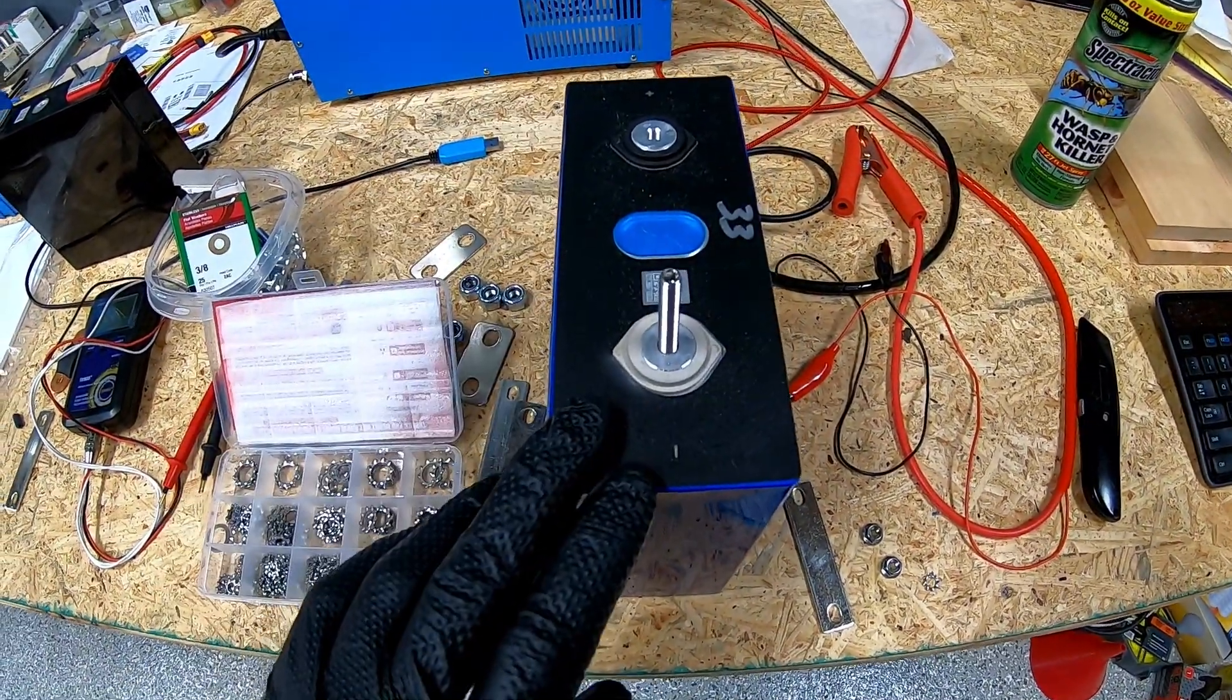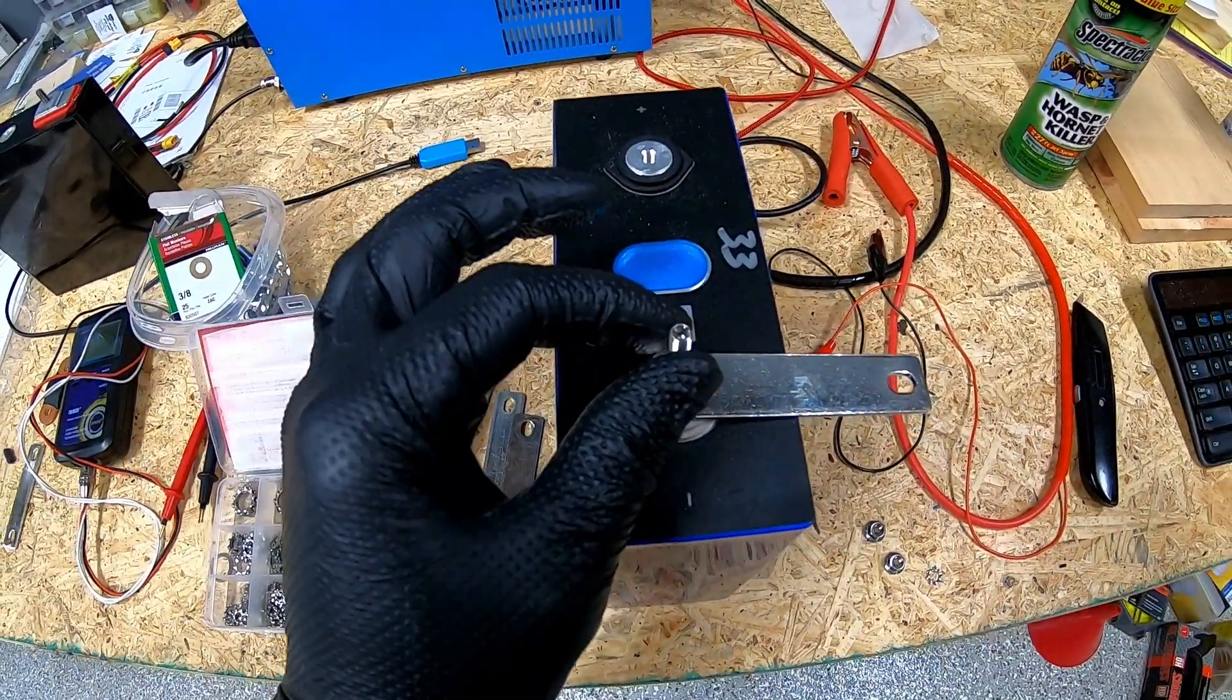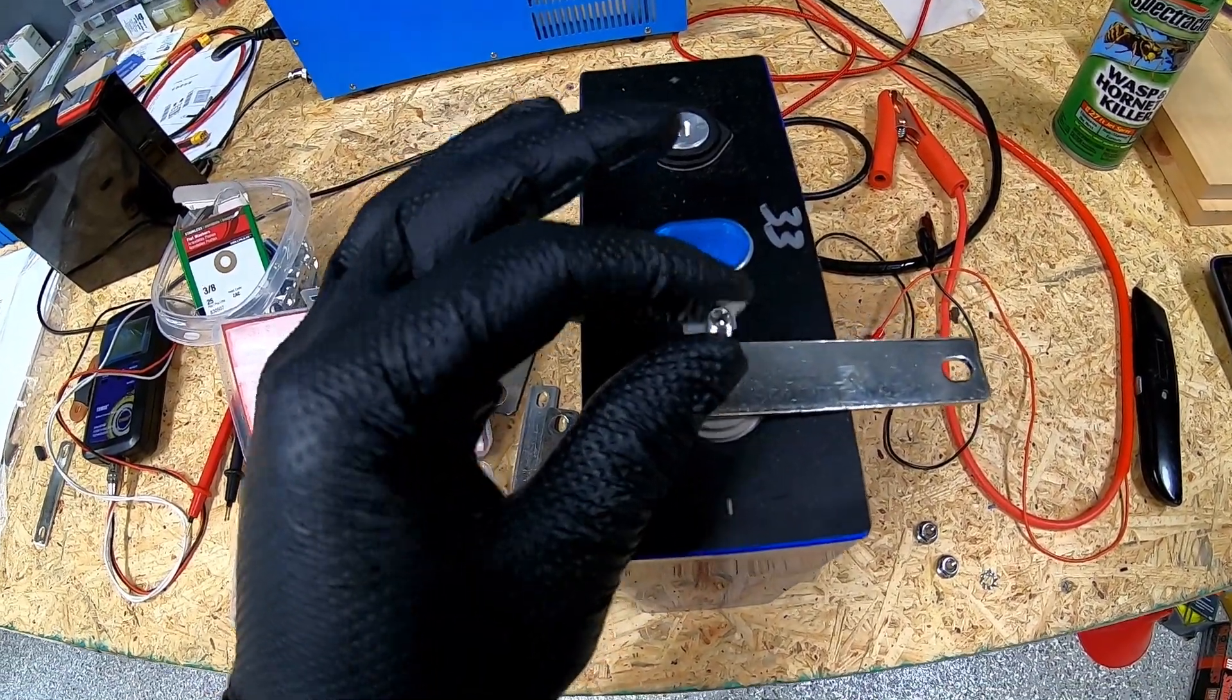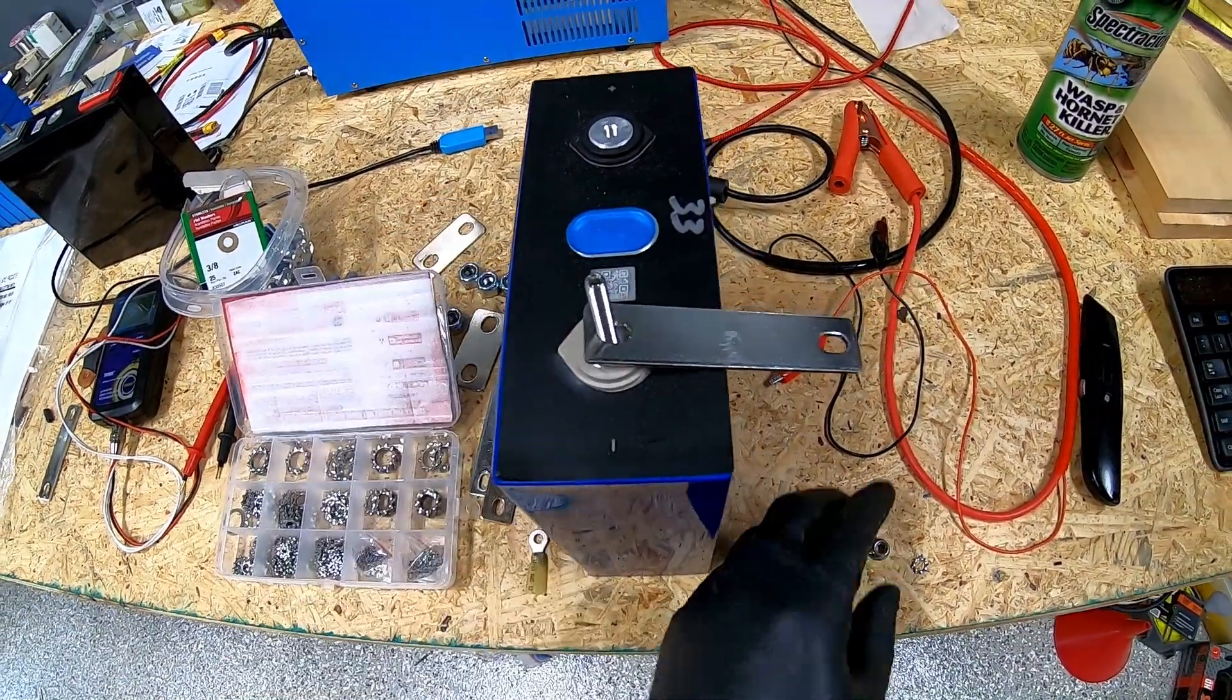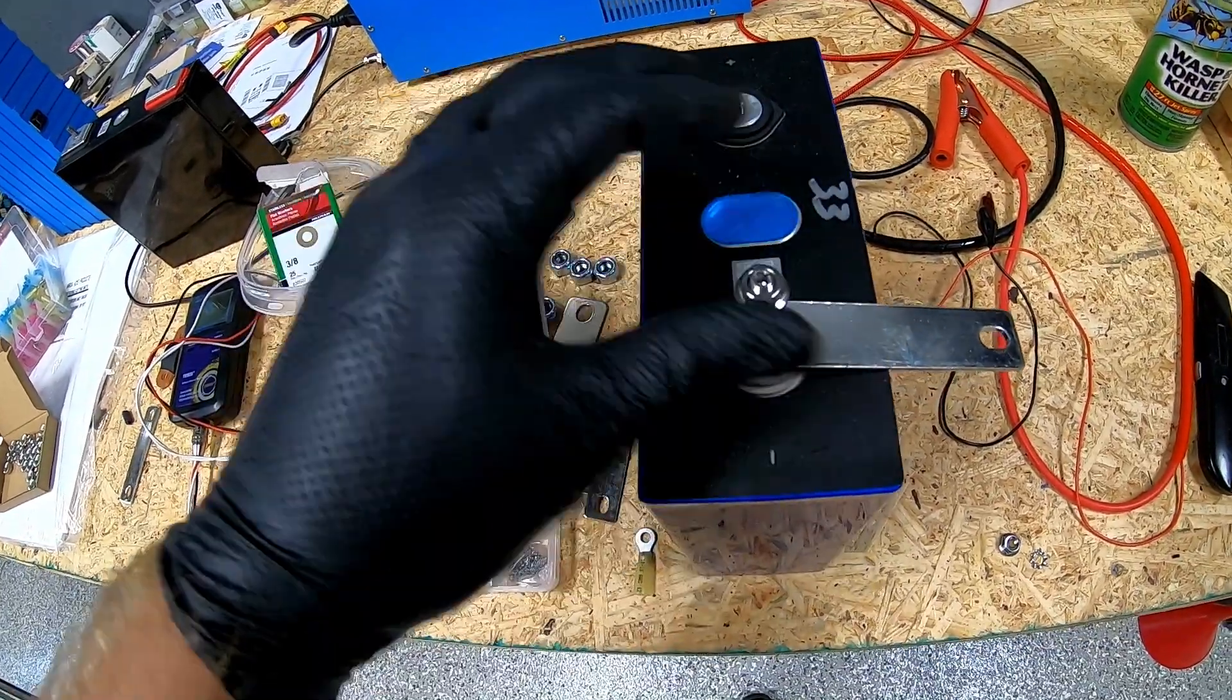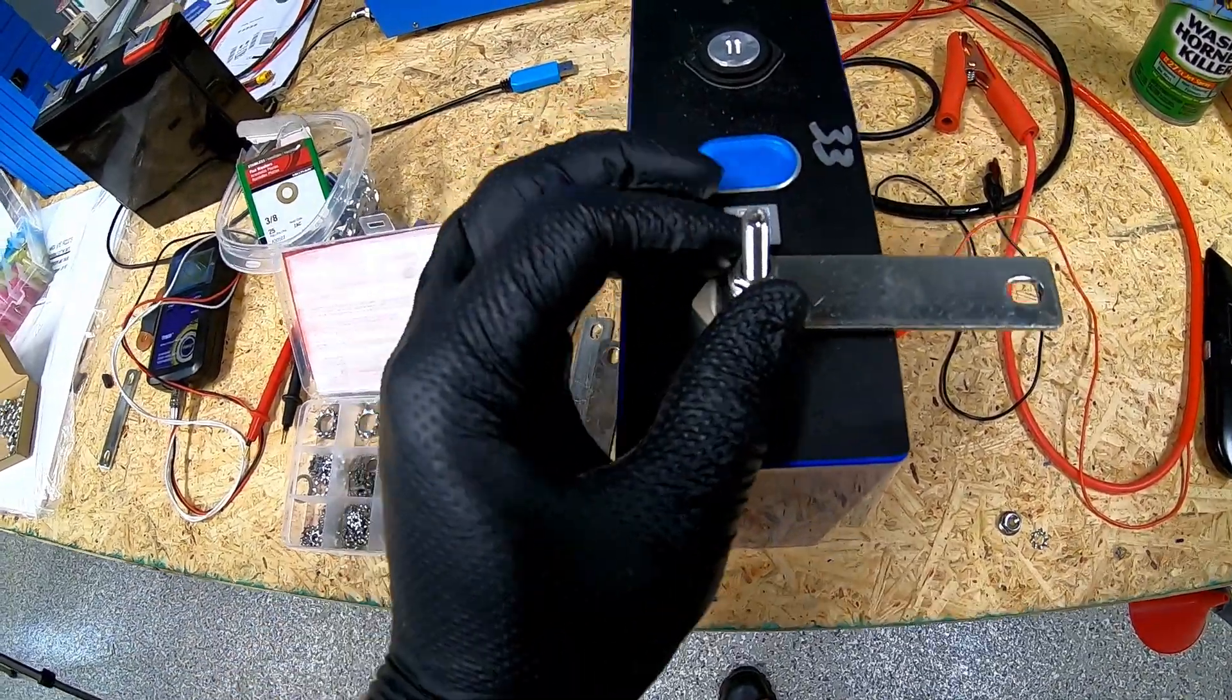If you remember the current battery bank setup - using this cell as an example - you've got your grub screw or set screw or threaded rod, however you want to look at it. These little allen set screws they send with it, and then in our setup we have one of these serrated flange nuts on top of that.